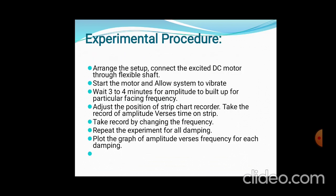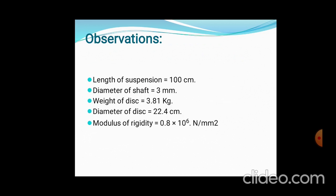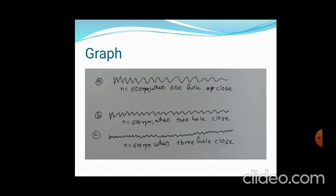The experimental procedure is quite simple — run the system with the DC motor under fluctuating load. The observations include: length of suspension, diameter of shaft, weight of disc, diameter of disc, and modulus of rigidity, given as 0.8 × 10⁶ Newton per mm².